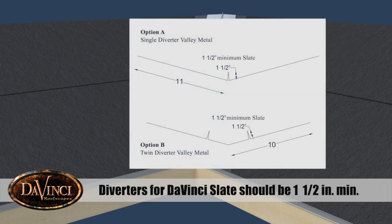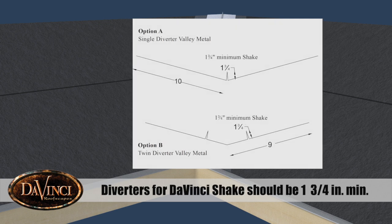Diverters for DaVinci Slate should be a minimum of 1.5 inches. Diverters for DaVinci Shake should be a minimum of 1.75 inches.